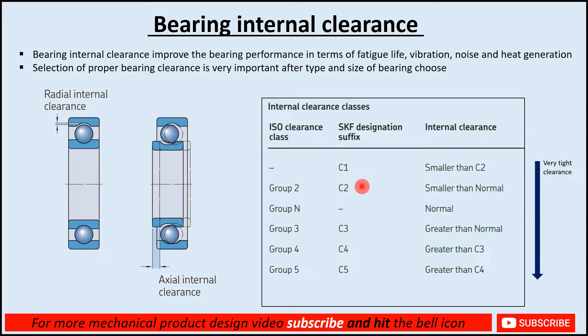Bearing internal clearance is related to bearing performance in terms of fatigue life, vibration, noise, and heat generation. If we choose a very tight clearance, vibration and noise will be less, but heat generation and friction will be high, impacting bearing life. If we choose too loose a clearance, heat generation and friction are less, but vibration and noise are more. So we need to choose the proper internal clearance as per the application.